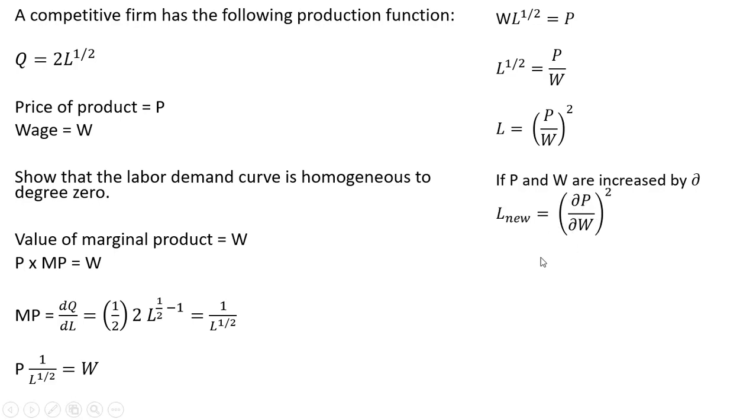I'm going to factor out now an alpha. So alpha squared here in the numerator, alpha squared here in the denominator. This will simplify to alpha raised to the power of zero. And that tells us that labor demand curves are homogeneous to degree zero.